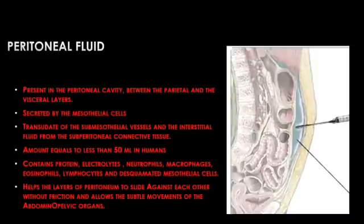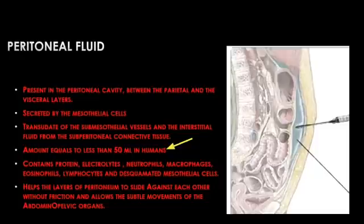The peritoneal fluid is similar to the plasma of blood vessels, so it contains protein, electrolytes, and other features like neutrophils, macrophages, eosinophils, lymphocytes, and desquamated mesothelial cells. The amount is approximately 50 ml in human beings. If this amount increases, that condition is called ascites — we will see later what ascites is and how it is caused.